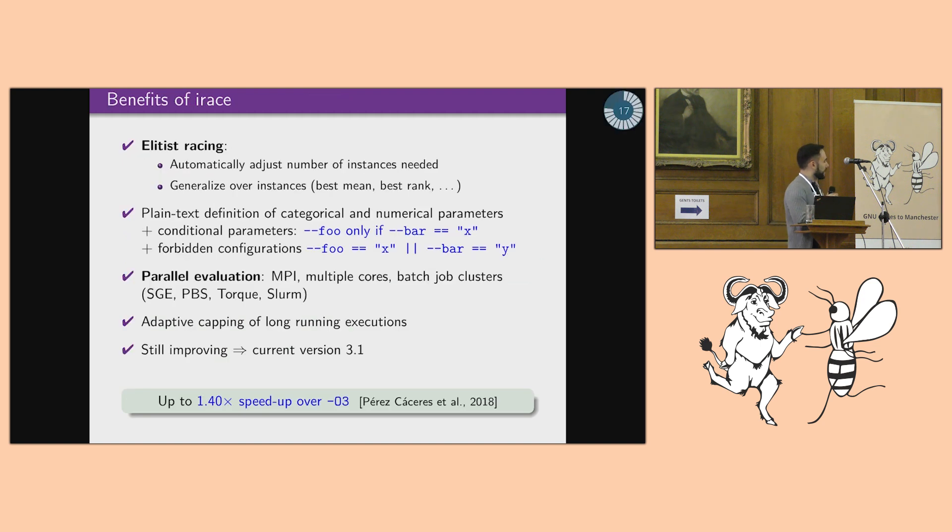The good thing about IRIS is that we are using, I would say, a better algorithm. This algorithm is ELITIS racing, which is one of the benefits that it has is that automatically decides how many instances you need to see to be able to declare that one configuration is better than another. So this means that it adapts to the variance of the problem, and also the goal there is to generalize over many inputs, over many instances, so you're not trying to optimize the code for a particular input or for a particular scenario, but you are trying to get the best code that you want that can work over a generalization of the instances.